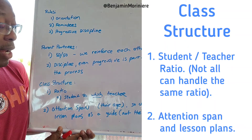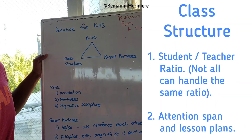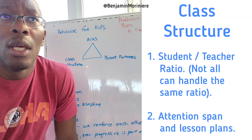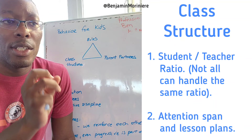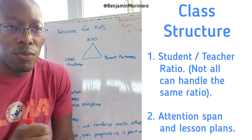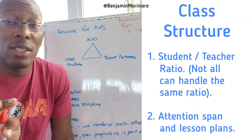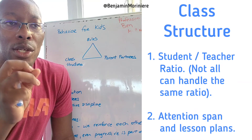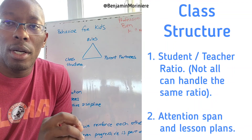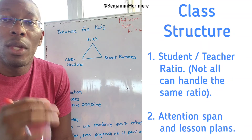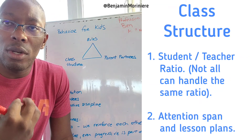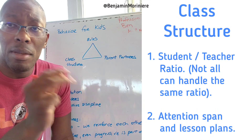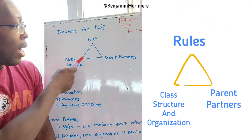Also under class structure: attention span. Generally, a kid's attention span in minutes is roughly equal to their age — so a seven-year-old has about seven minutes. That's why you need a lesson plan. Your lesson plan tells you when to switch activities. Even if you're working on an arm bar from guard all week, you might do it for five minutes, take a water break, come back for a few more minutes, break again. With a standardized curriculum repeated over days or weeks, they'll eventually pick it up.